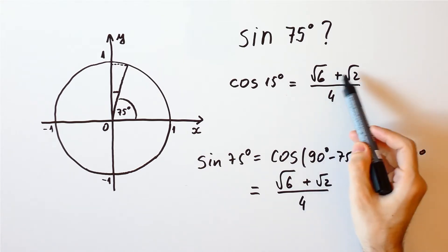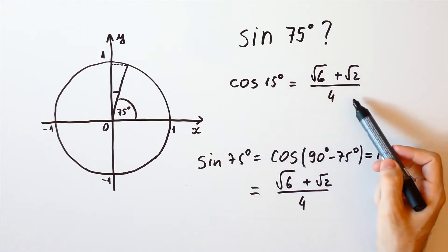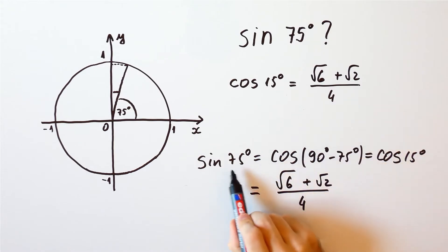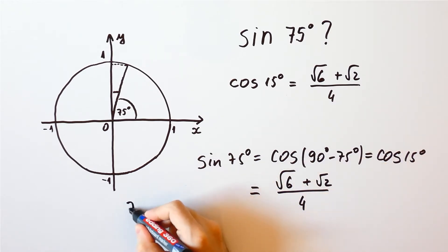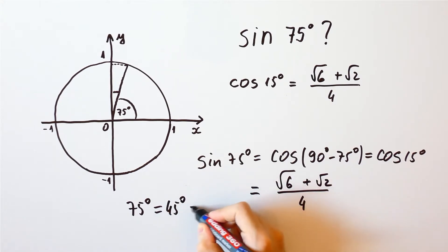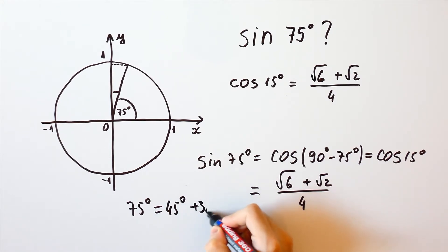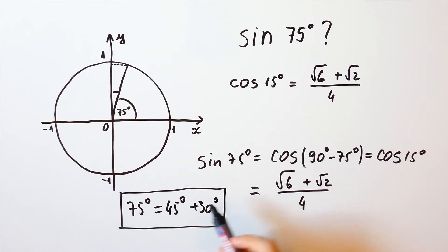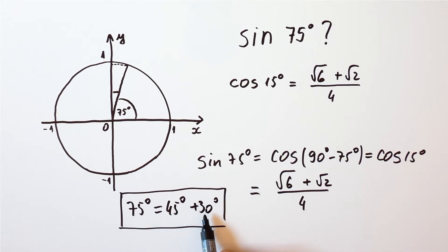But if we didn't know the cosine of 15 degrees, what could we do? Note that 75 degrees is equal to 45 degrees plus 30 degrees, and we know the sine and the cosine of both 45 degrees and 30 degrees. How can we use that to find the sine of 75 degrees?